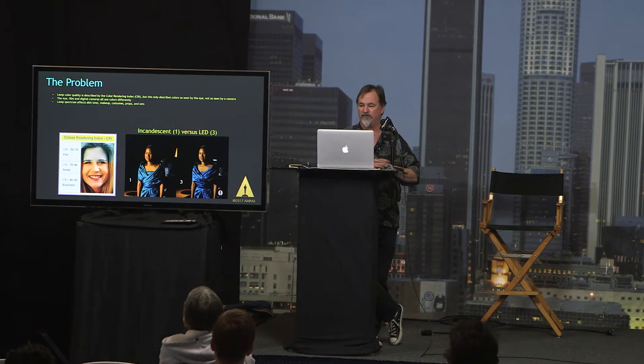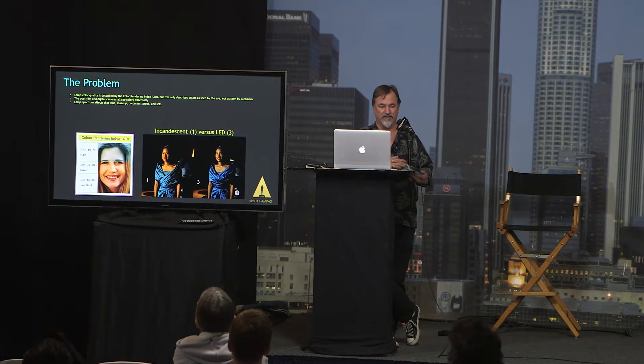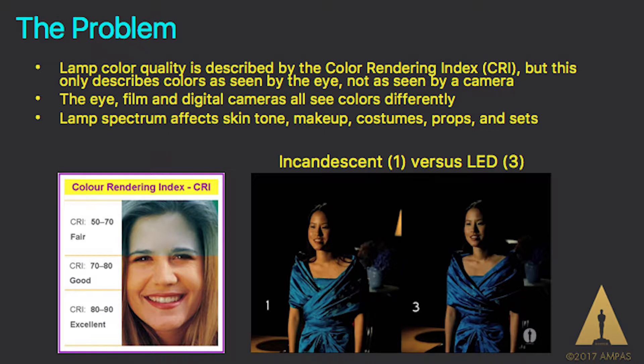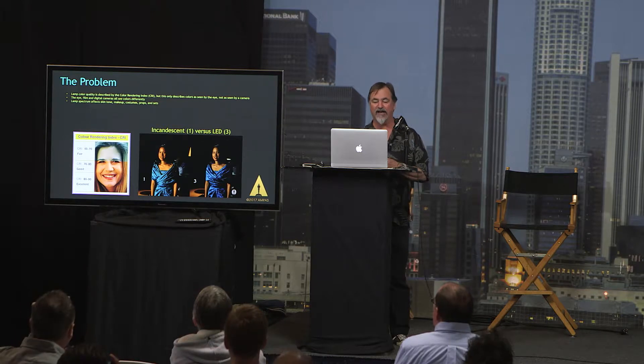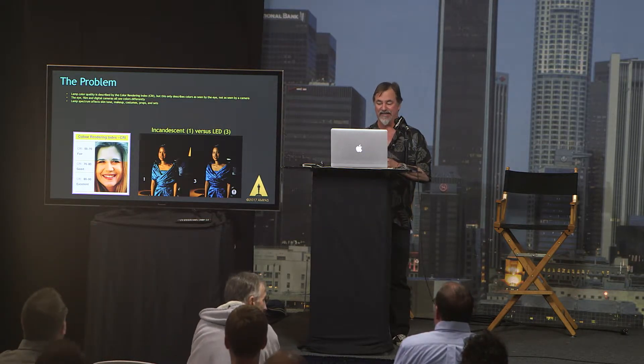A few years ago, we started to see that there was a problem in terms of how do we judge the quality and spectrum and usefulness of LEDs for motion picture lighting. Because motion picture lighting is very specific, with specific primaries and spectral sensitivities in cameras. It's pretty easy to recognize that CRI, color rendering index, is insufficient to the task because it's just sort of a general color temperature average.